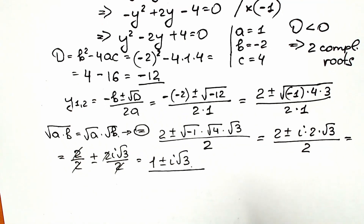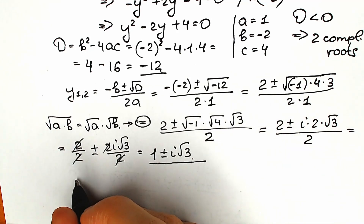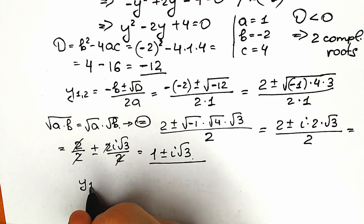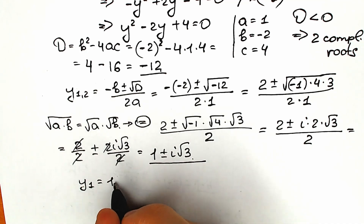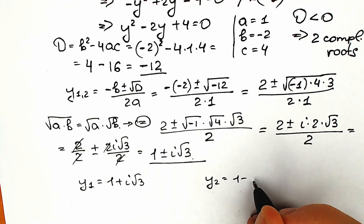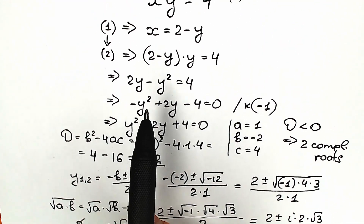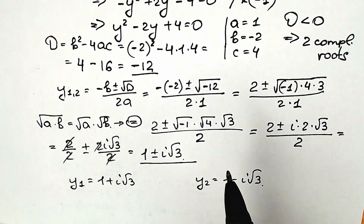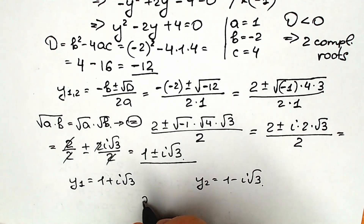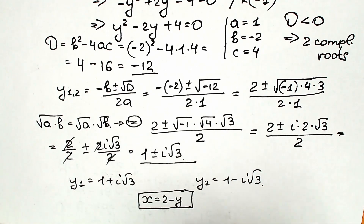This is our answer for y. So y₁ equals 1 plus i times square root of 3, and y₂ equals 1 minus i times square root of 3. Now we need to find the corresponding x values. We recall that x equals 2 minus y.